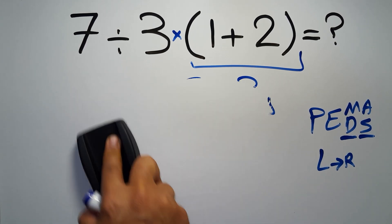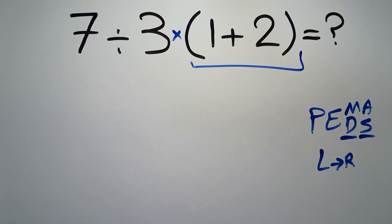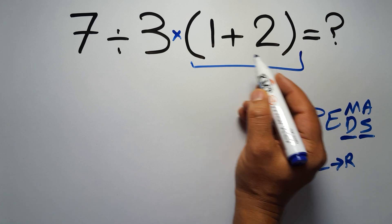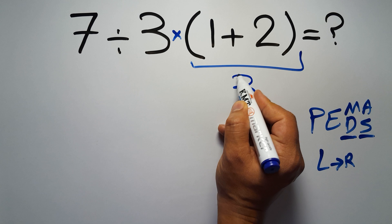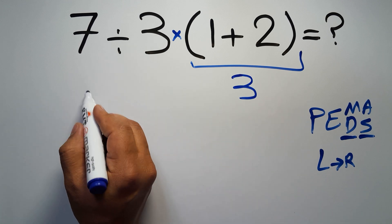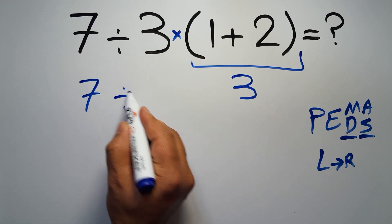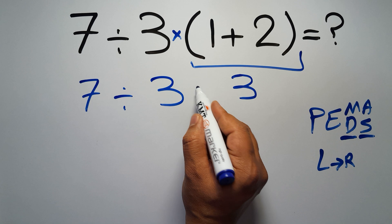So first this parentheses. Inside this parentheses we have 1 plus 2 which gives us 3, so 7 divided by 3, then times 3.